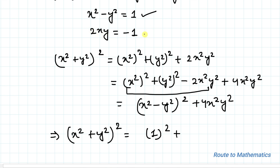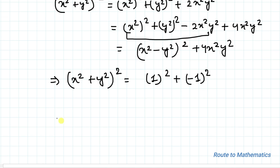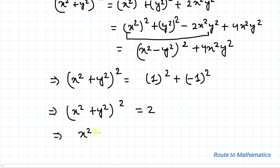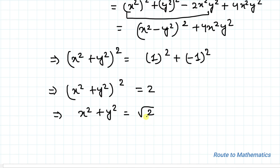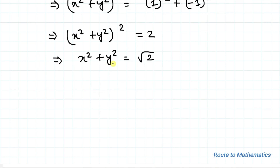Substituting 2xy = -1, we have (x² + y²)² = 1 + (-1)² = 2. Therefore x² + y² = √2. We take only the positive root because the sum of squares of two real numbers must be greater than zero. So we now have x² - y² = 1 and x² + y² = √2.